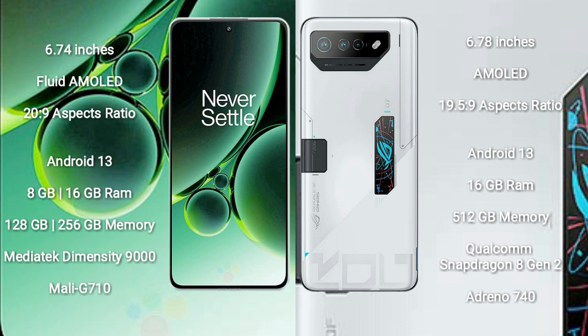OnePlus Nord 3 runs on the Android 13 operating system. Asus ROG 7 Ultimate also runs on the Android 13 operating system.